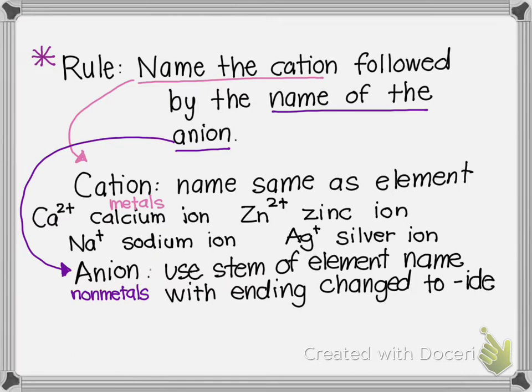So anions, you see here, the rule says use the stem of the element name. And in chemistry, when they're talking about the rules and the elements, the stem is just like the main part of whatever the element name is. It's really the beginning of it. They call that the stem. So you use the stem of the element name, but you change the ending to I-D-E.